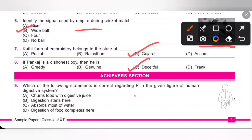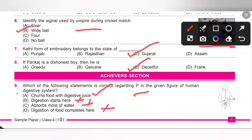Next, Achiever section. Ninth one: which of the following statements is correct regarding P in the given figure of the human digestive system? P represents the stomach. Option A — churns food with digestive juice — is the correct statement. Option B — digestion starts here — is incorrect because digestion starts from the mouth. Option C — absorbs most of the water — is incorrect because the large intestine absorbs most of the water. Option D — digestion of food completes here — is also incorrect, as digestion completes in the small intestine. So option A is the correct answer.